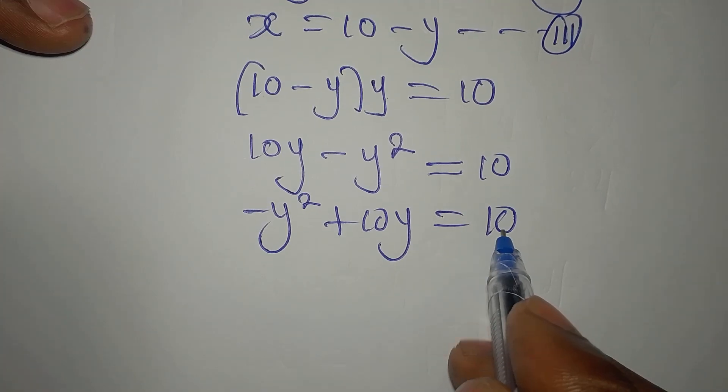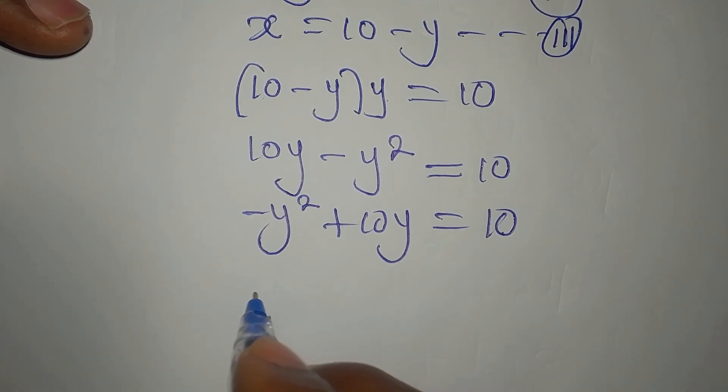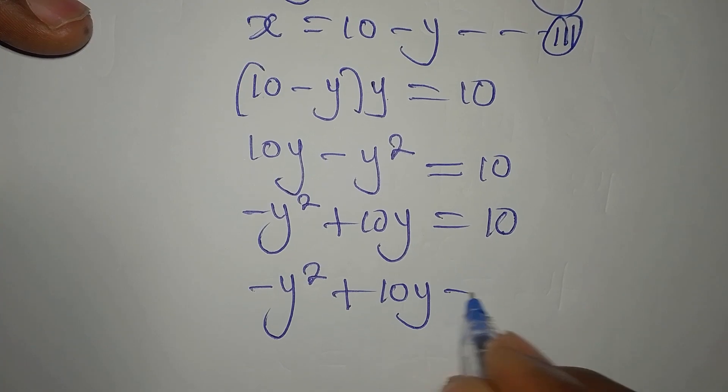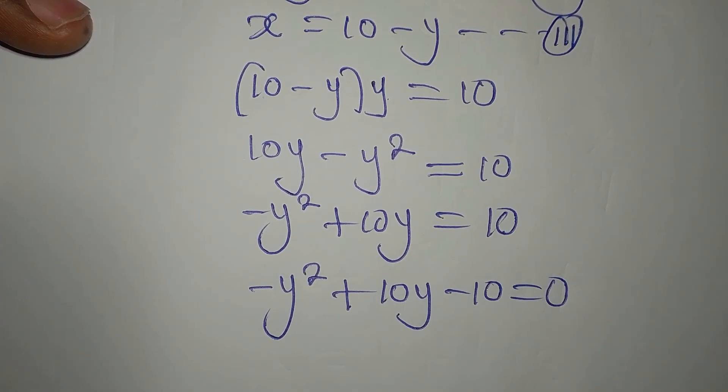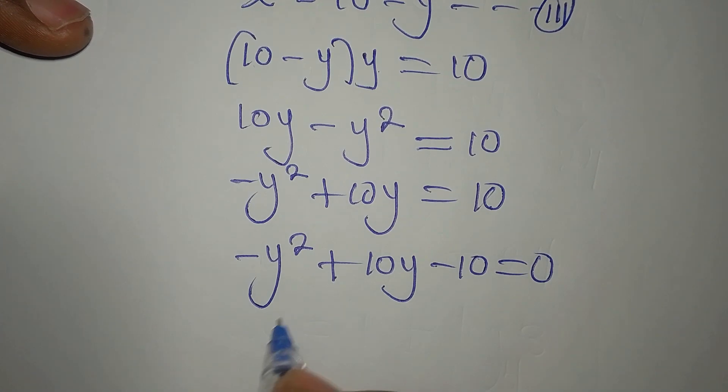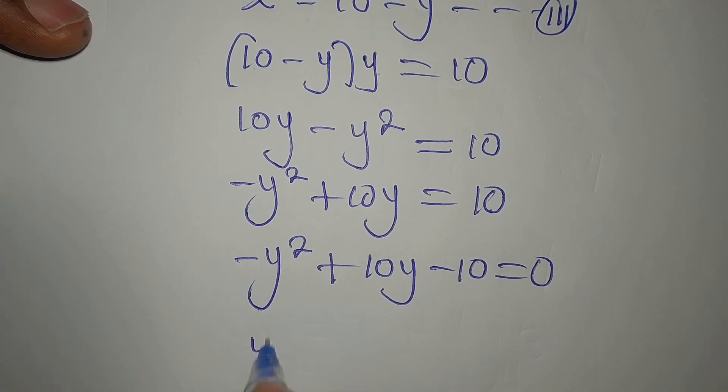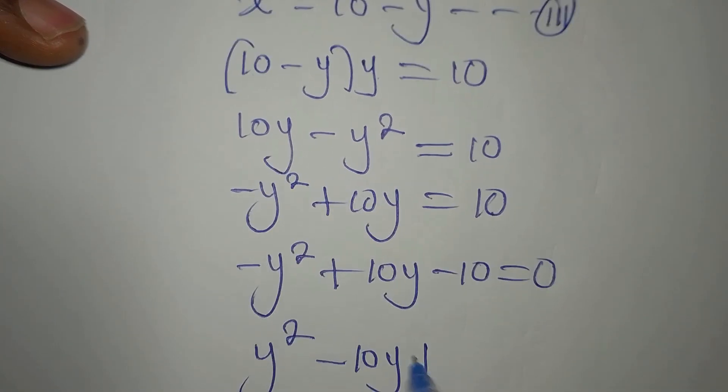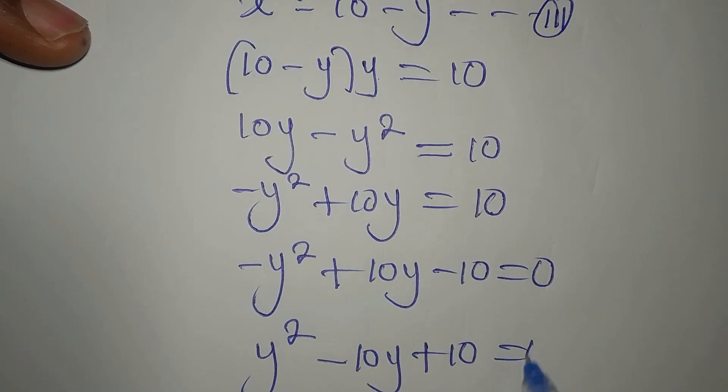Now, let me bring this to the left. So we have minus Y squared plus 10Y minus 10 equals 0. Now, we have Y squared minus 10Y plus 10 equals 0.